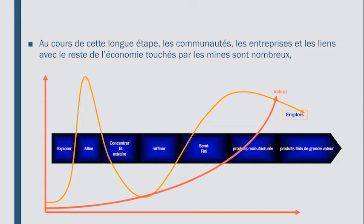De façon schématique, voici comment se présente le processus : explorer, concentrer et extraire, raffiner le produit. Vous avez le produit semi-fini, puis on l'amène à l'usine où il devient un produit manufacturé, et enfin vous avez le produit fini de grande valeur revendu au marché international. Quand on parle de coût de l'or ou de coût du baril, on parle effectivement du produit fini qui a de la valeur et qui est vendable sur le marché.